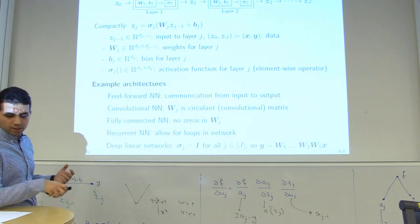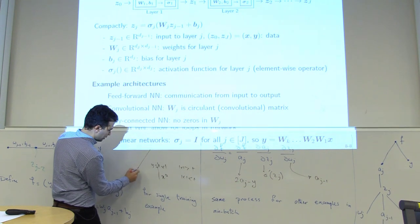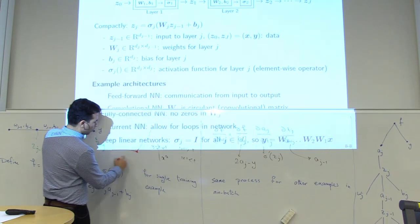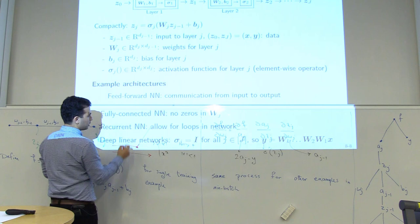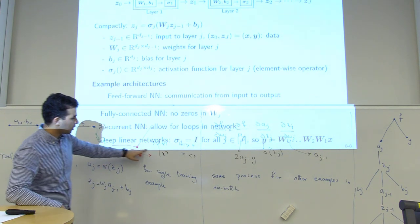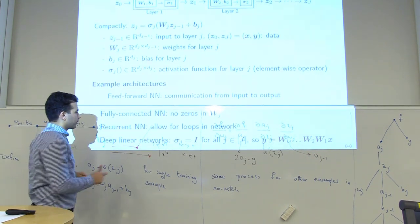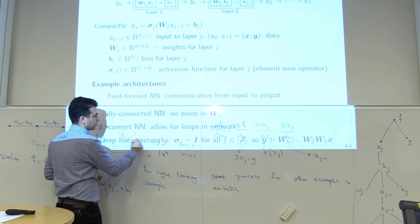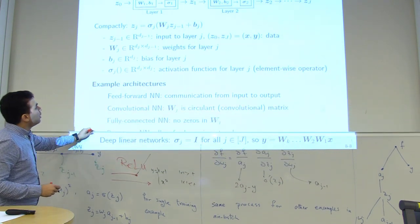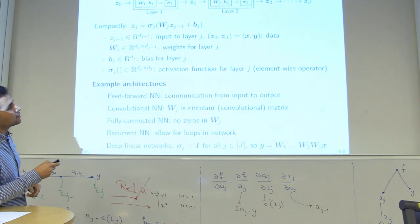The ReLU function is zero for negative inputs and equal to the input for positive values. Z_0 is the network input and Z_j is the final output Y. Architectures covered by this form include feed-forward neural networks, where all weights go from input to output with no feedback.